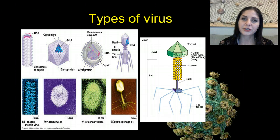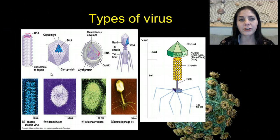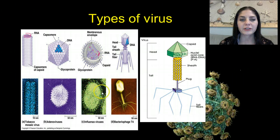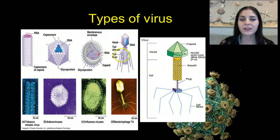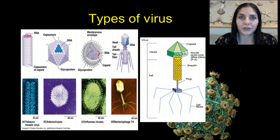Here are pictures of the different types of viruses. Earlier we talked about how they have geometric shapes, and these are some of the different shapes that viruses occur in. The two most common ones you'll see are influenza viruses, which look somewhat similar to the HIV virus as well. And this one here is the bacteriophage — bacteriophages kill bacteria and they look kind of like creepy little spiders.